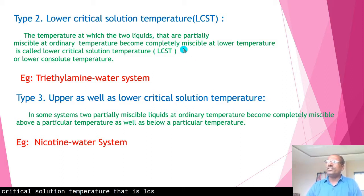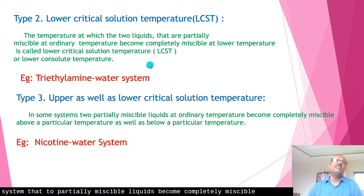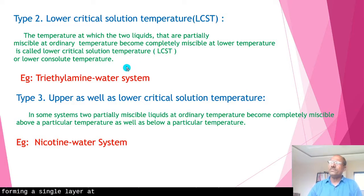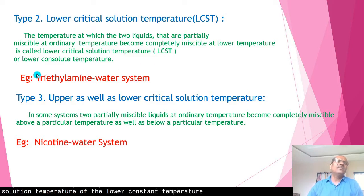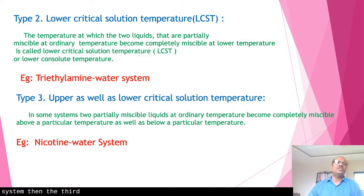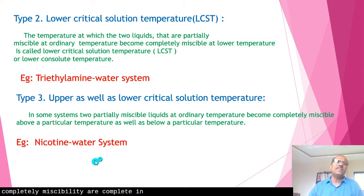The lower critical solution temperature, LCST, applies when temperature is decreased. In some systems, at a lower temperature the two partially miscible liquids become completely miscible, forming a single layer. That temperature is called the lower critical solution temperature or lower consolute temperature. This is observed in the triethylamine-water system.